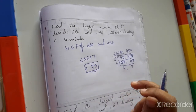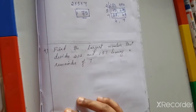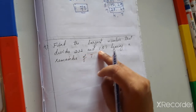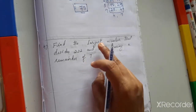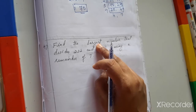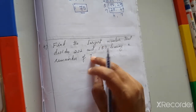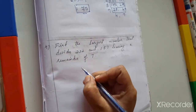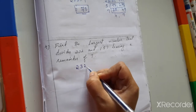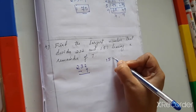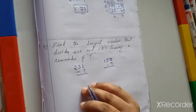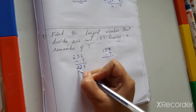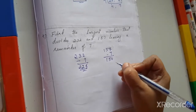Fourth question: find the largest number that divides 232 and 157 leaving a remainder of 7. Largest number means HCF. First subtract 7: 232 − 7 = 225 and 157 − 7 = 150. Now find the HCF of 225 and 150.